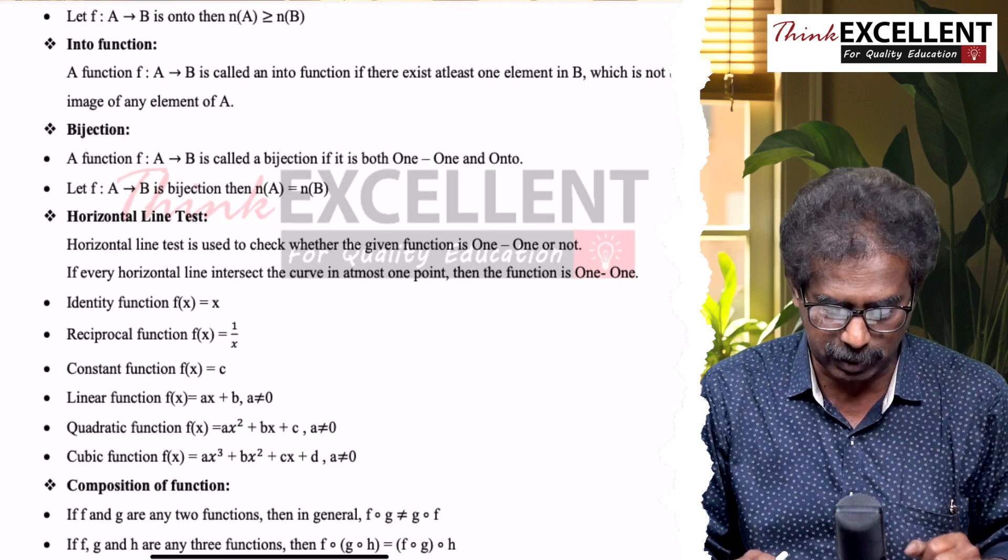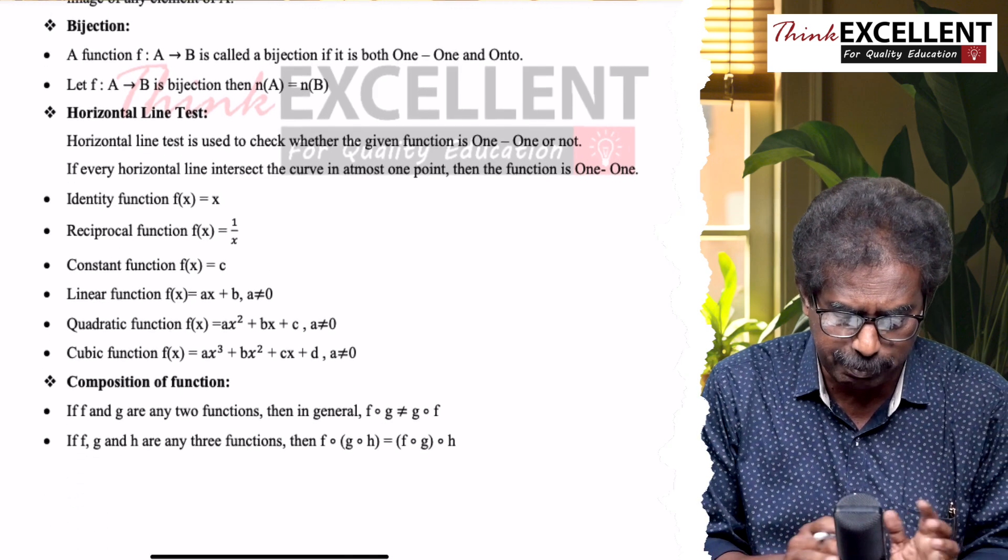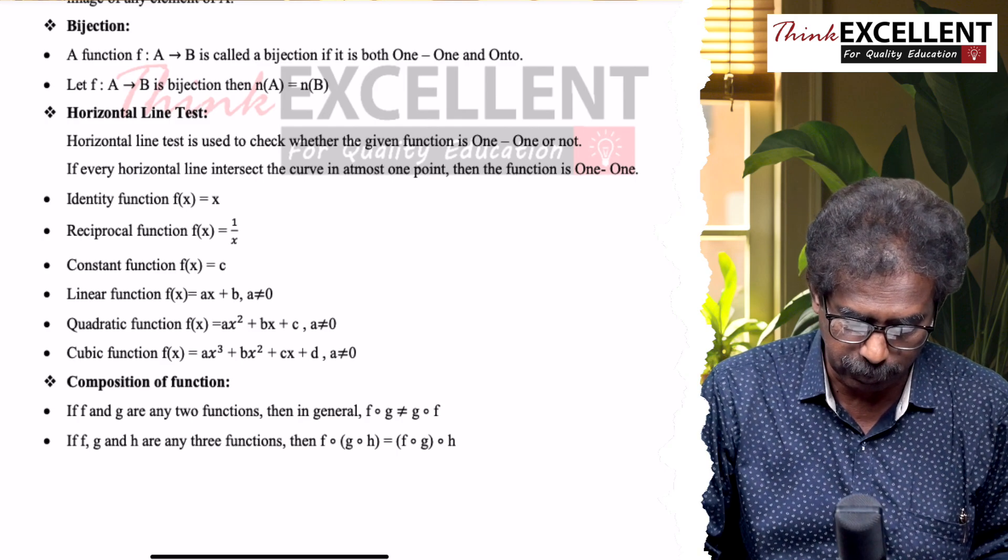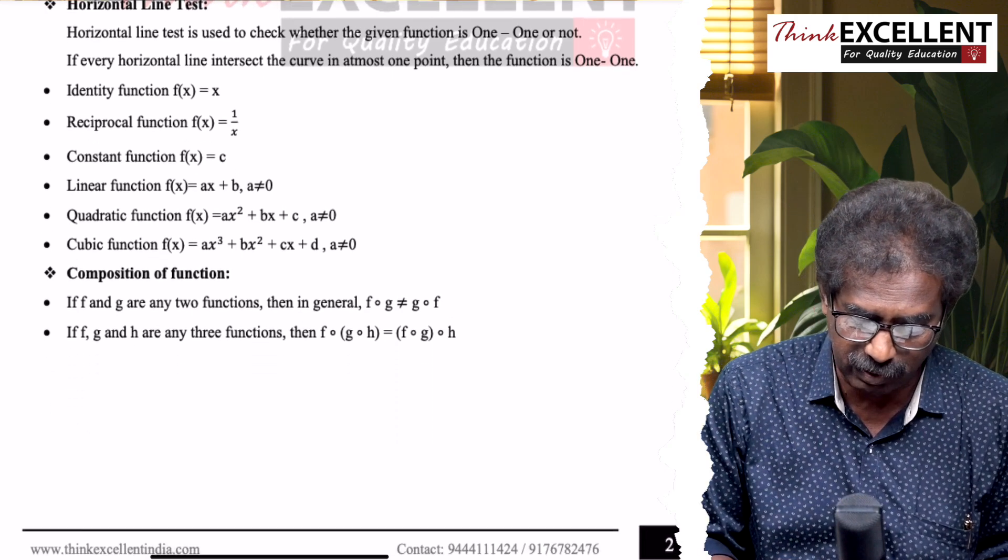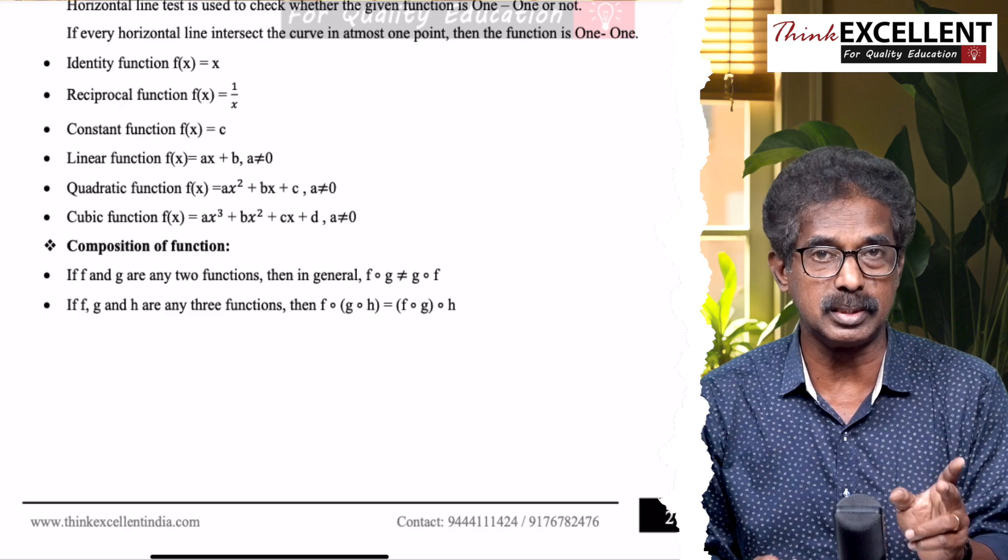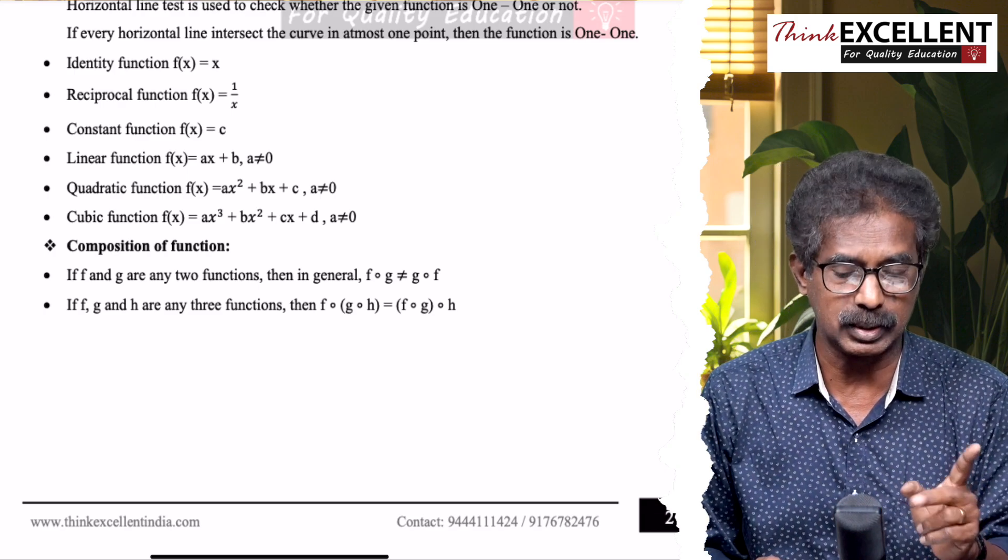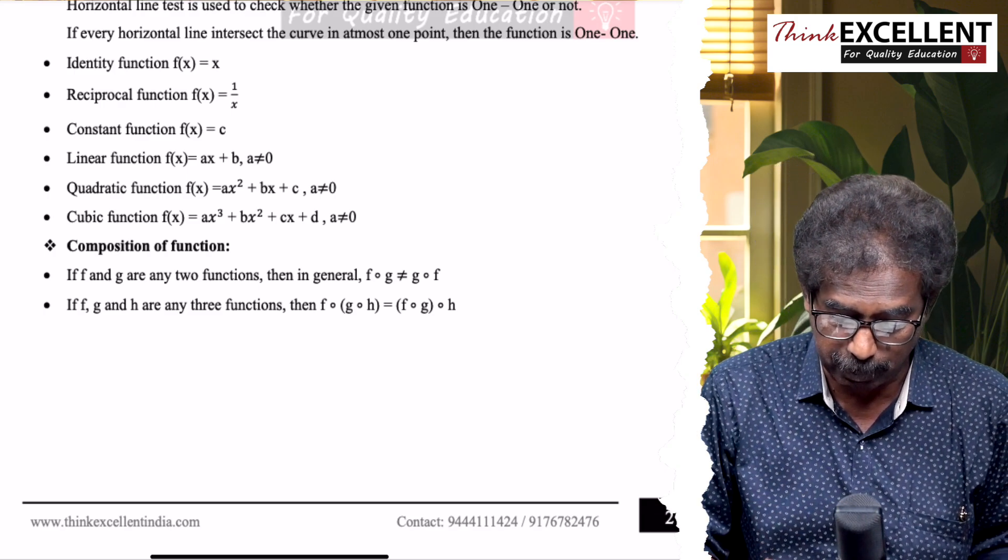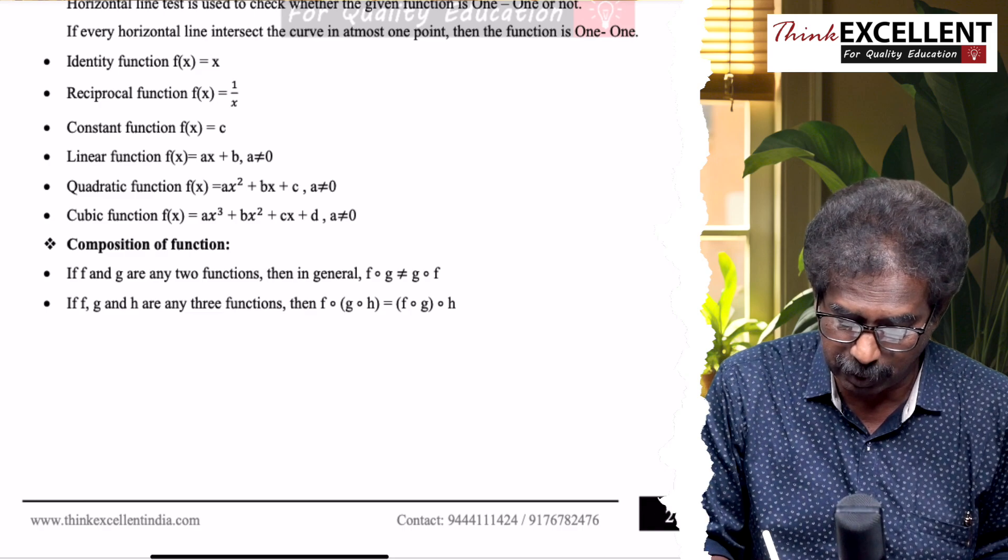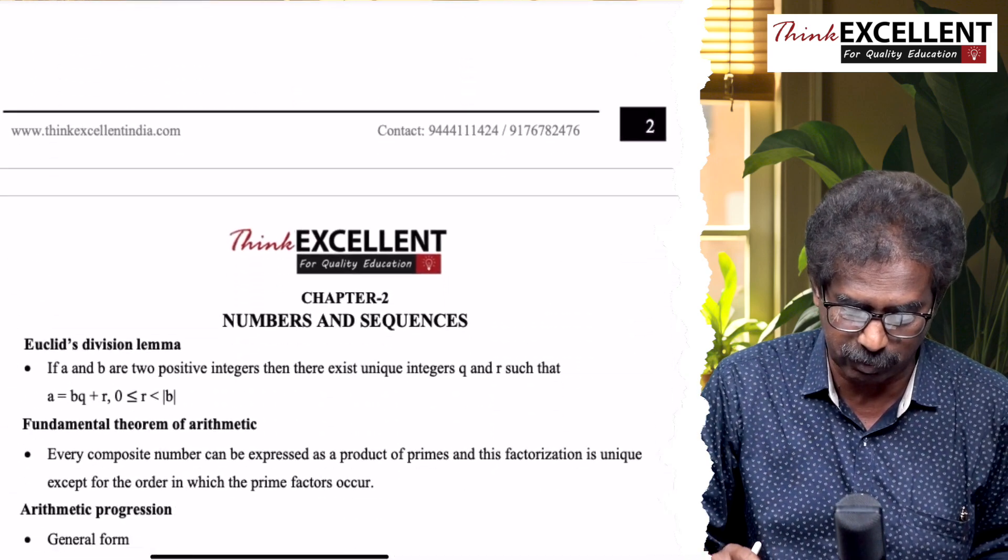Many-one function, onto function, into function. Then bijection - it is both one-one and onto. Then we call it as bijection. Horizontal line test. Then different types of functions, the theory questions are very important. Composition of function: f composition g, g composition f, they are not equal in general. But associative property is satisfied.